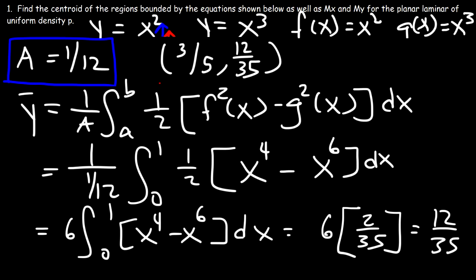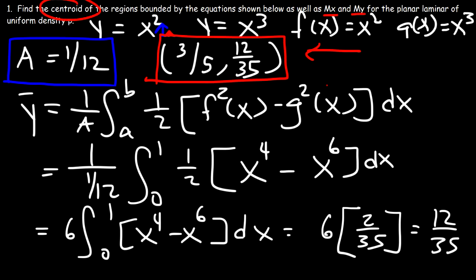So this is the answer. For this type of problem, all you need to do is determine the appropriate formulas for mx, my, and the x and y coordinates of the centroid. You need to determine which equation is f(x) and which is g(x) by graphing, find the points of intersection for a and b, then plug into the formulas to get the answer.